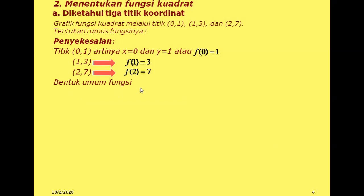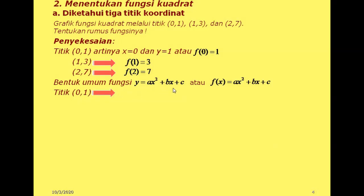Kemudian, kita ingat bentuk umum fungsi kuadrat: y sama dengan ax kuadrat plus bx plus c, atau bisa ditulis f(x) sama dengan ax kuadrat plus bx plus c. Dari titik yang pertama, kita substitusikan ke fungsi bentuk umum ini. x-nya 0, y-nya 1. y diganti 1, x diganti 0. Hasilnya adalah c sama dengan 1, karena 0 kuadrat adalah 0, b kali 0 adalah 0, sehingga kita sudah mendapatkan nilai c sama dengan 1.